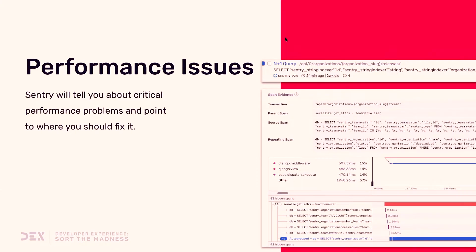So introducing today in early access is performance issues. This is where we'll start telling you about critical performance problems and point you to where you need to fix it in the form of a condensed span tree. So instead of scrolling down a span tree that could be hundreds if not thousands of spans long, we'll tell you exactly where in that span tree you need to focus, because that's where the performance problem is. We're starting with n plus one database queries — that's when database queries are operated in a loop and the code is executed for every item in that query. More performance issues will be coming in the near future.